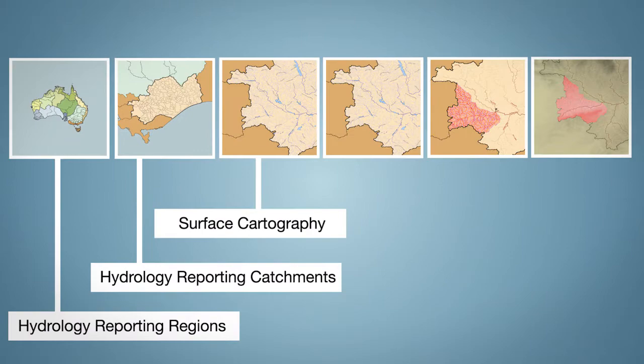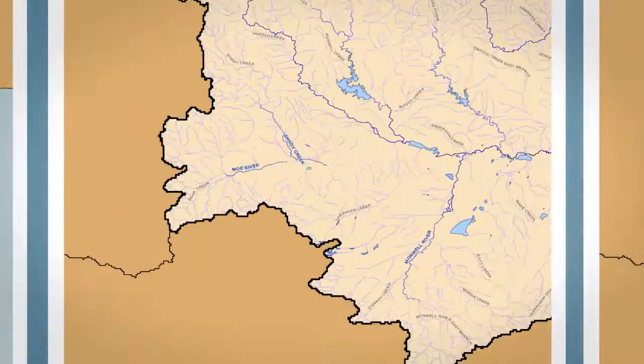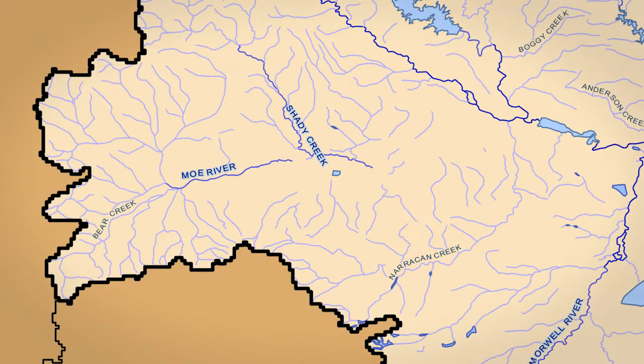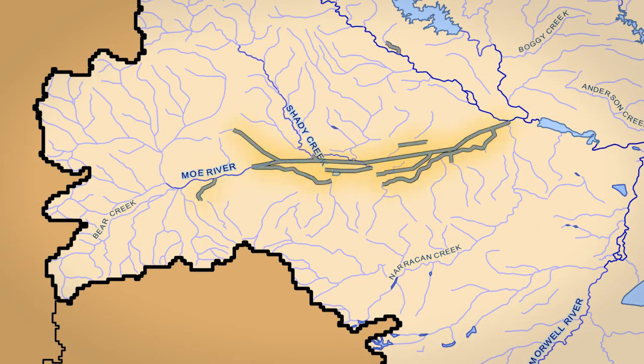Surface cartography lets you visualise surface water features such as canals and bridges. This context is great for water managers and emergency services — for example, to anticipate downstream communities affected by floods.